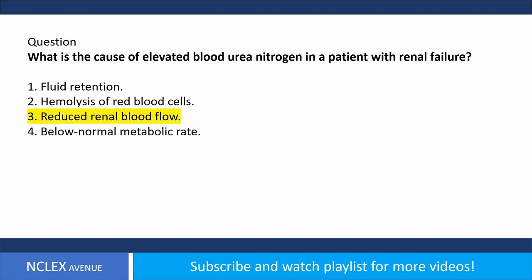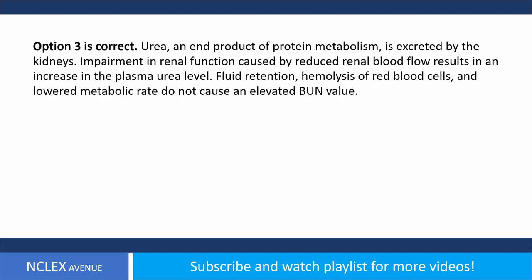Answer. Option 3 is correct. Urea, an end product of protein metabolism, is excreted by the kidneys. Impairment in renal function caused by reduced renal blood flow results in an increase in the plasma urea level. Fluid retention, hemolysis of red blood cells, and lowered metabolic rate do not cause an elevated BUN value.